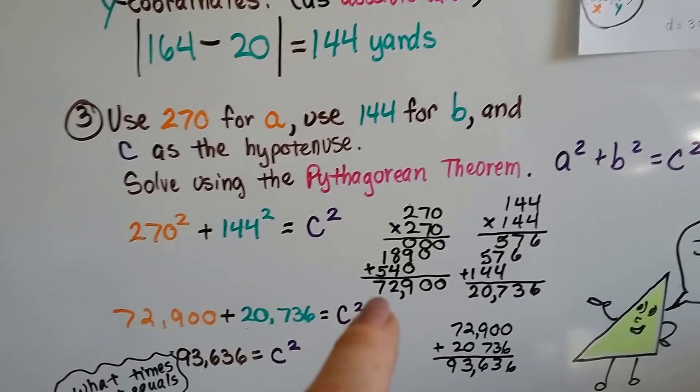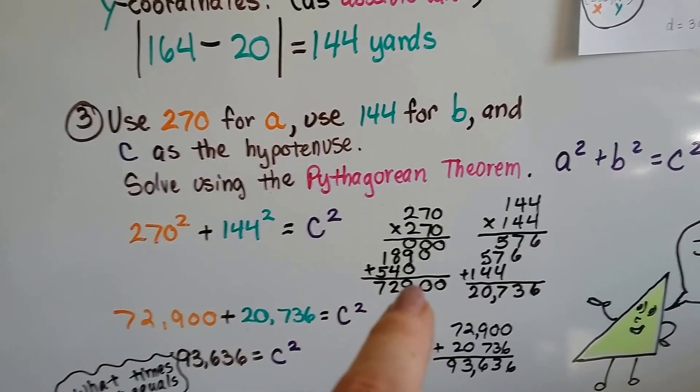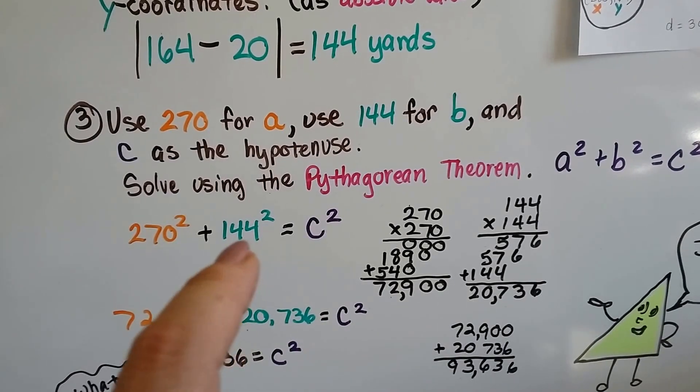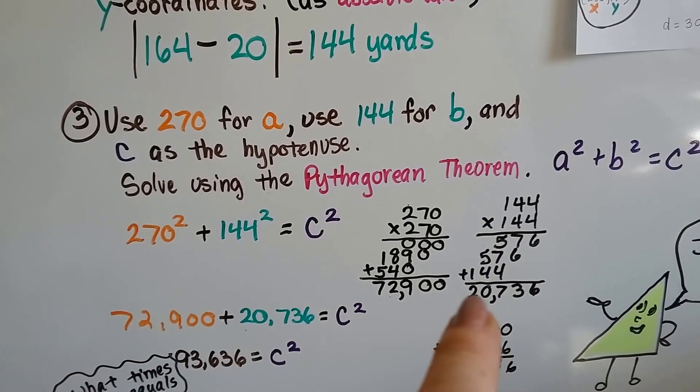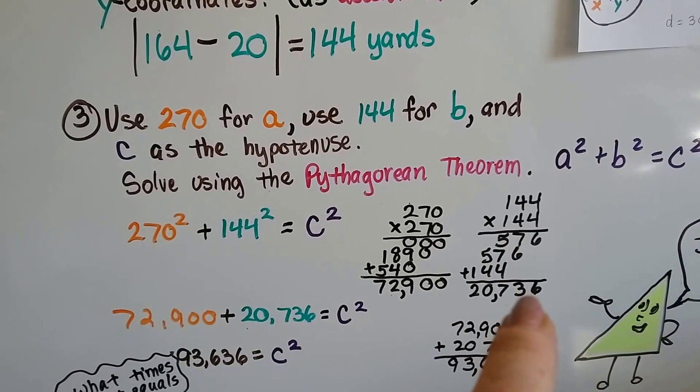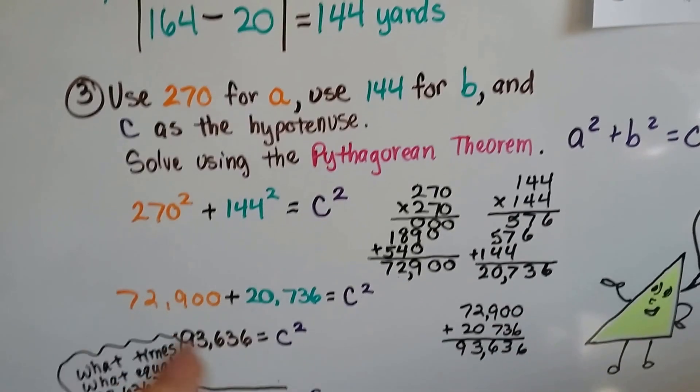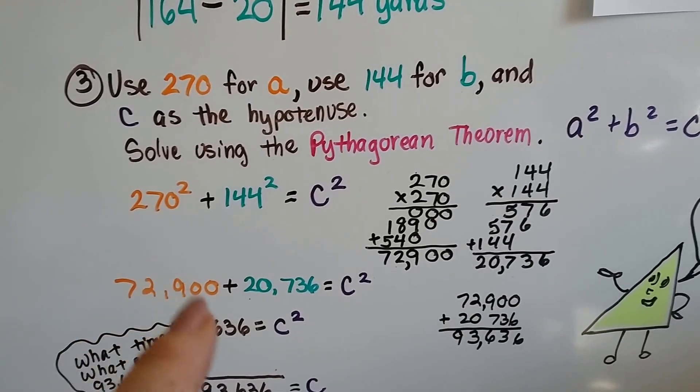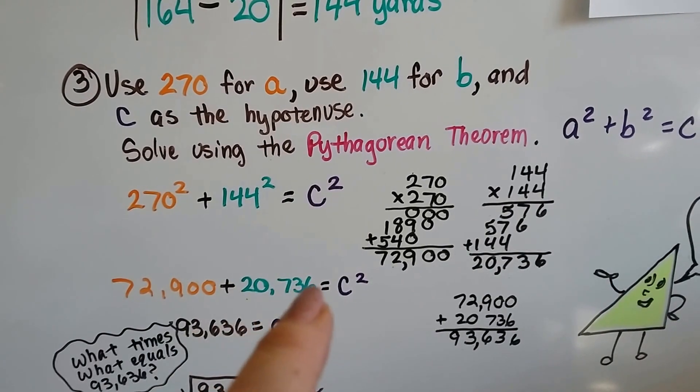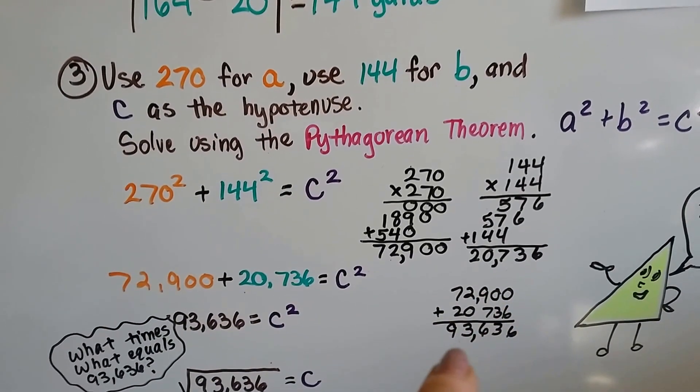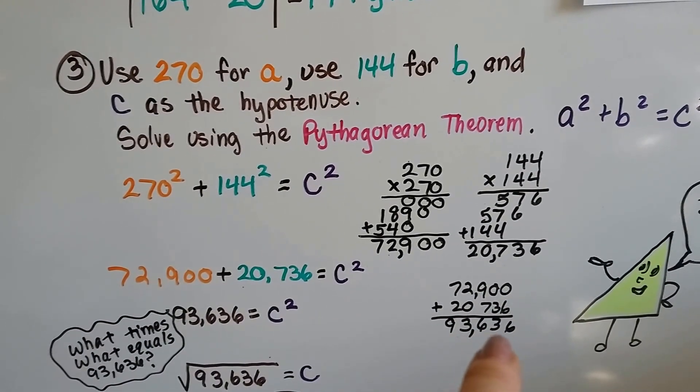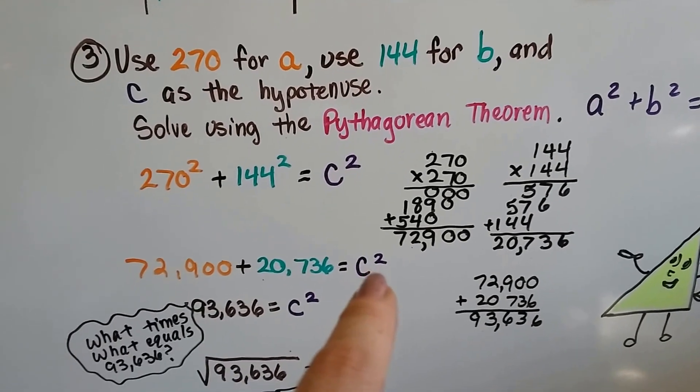270 times 270 is 72,900. 144 times 144 is 20,736. So now we've got 72,900 plus 20,736, and we add them up. We get 93,636, and that's what equals c squared.